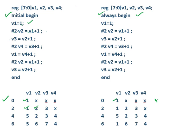At the same two nanosecond instant, two lines are evaluated simultaneously. This line happens at zero nanoseconds, this line at two nanoseconds, and this line at zero plus two equals two nanoseconds. So at two nanoseconds, v3 equals v2 plus 1, and v2 is 2, so v3 equals 3. But v4 is still not updated, so v4 remains unknown. This is the same for the always block.